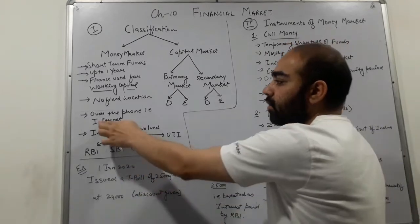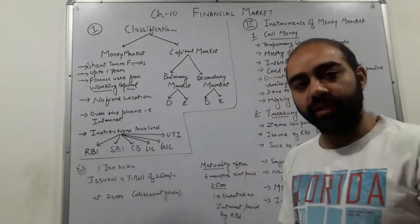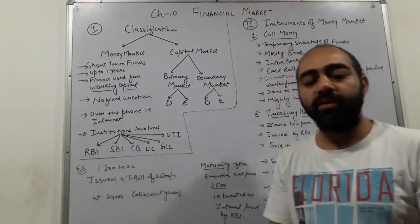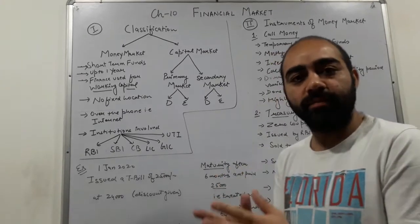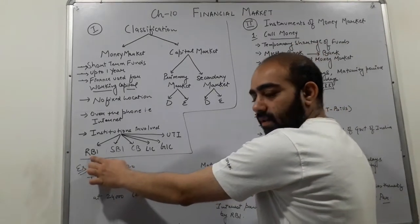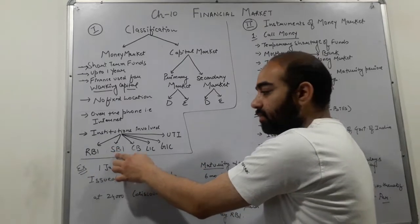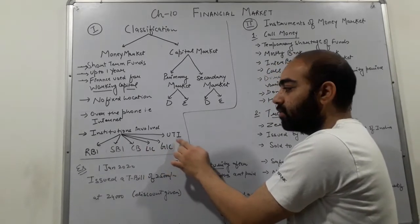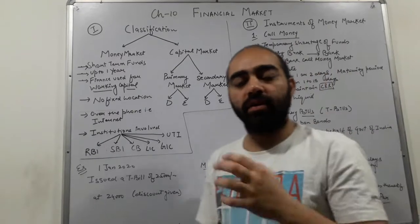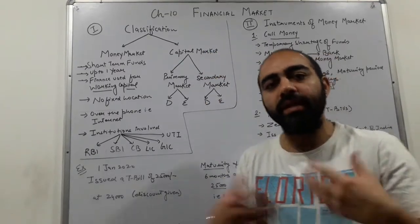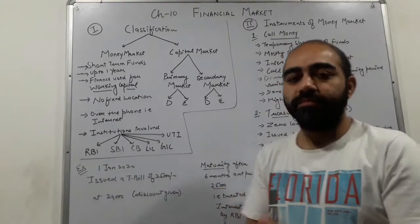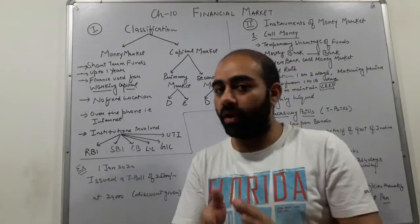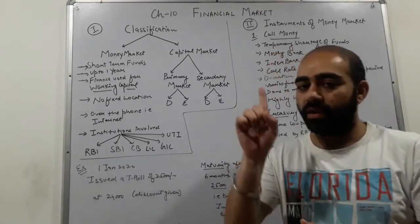This market operates over the telephone, fax, or nowadays on the internet — it is an over-the-phone market. The major players in this market are: Reserve Bank of India, State Bank of India, other commercial banks, Life Insurance Corporation, General Insurance Corporation, and Unit Trust of India. These are the major players who control and operate in this market. All sale and purchase of securities in this market is done for a time period of up to one year.